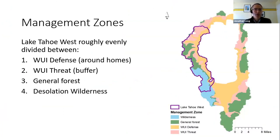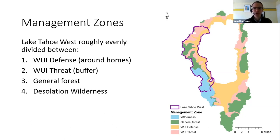Looking at Lake Tahoe West, there are four management zones delineated for the entire basin, roughly evenly distributed within Lake Tahoe West — about a quarter in each one. These are: a WUI defense area around homes, WUI threat which is a buffer outside of the WUI defense, the general forest, and wilderness — primarily the Desolation Wilderness within Lake Tahoe West. You likely won't see many landscapes like this where there's such a large amount of wilderness very close to a WUI. It's pretty distinctive and makes some of the results distinctive from other parts of the Sierra Nevada.